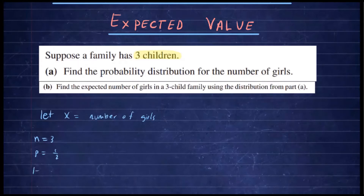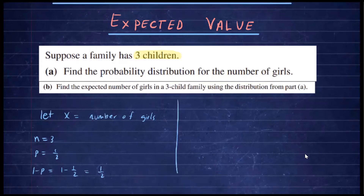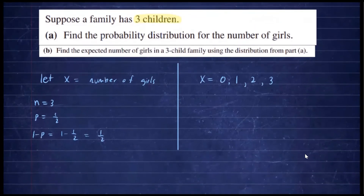The probability of one minus p is one minus one half, which is also one half. Knowing these values, we can answer the problem. If x is the number of girls in the family, the values x can take are: zero for no girls, one for one girl, two for two girls, and three for three girls — meaning all three children are girls. Now let's find their probabilities and put them in a table.